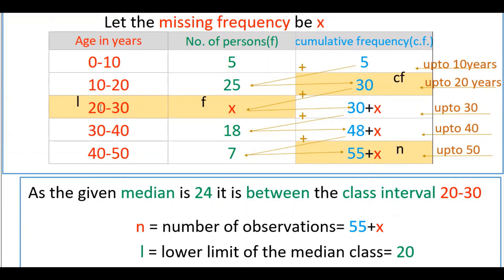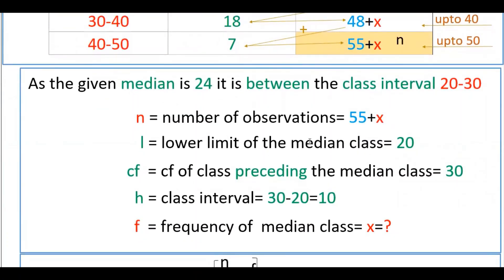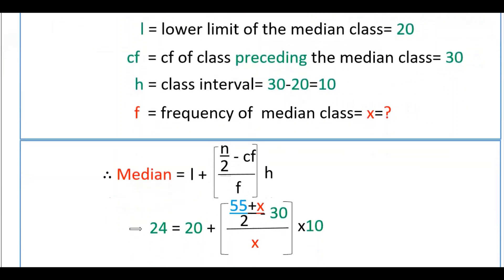Since 24 lies in the class interval 20 to 30, the lower limit l is 20, the frequency f is x, the cumulative frequency cf of the preceding median class is 30, n is 55 plus x, and the class width h is 30 minus 20 equals 10.